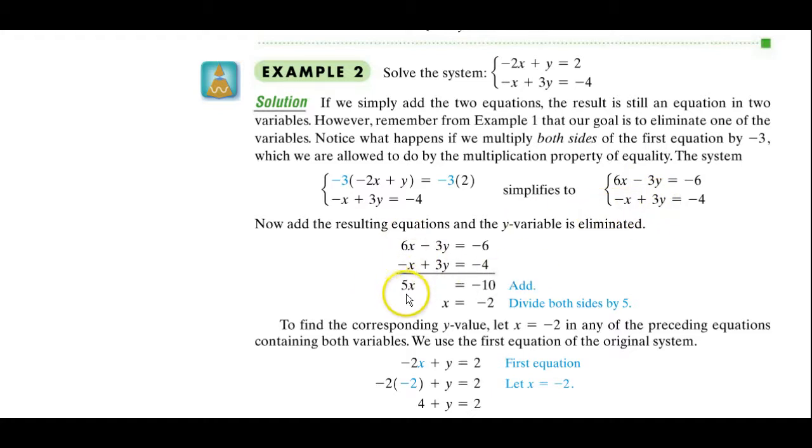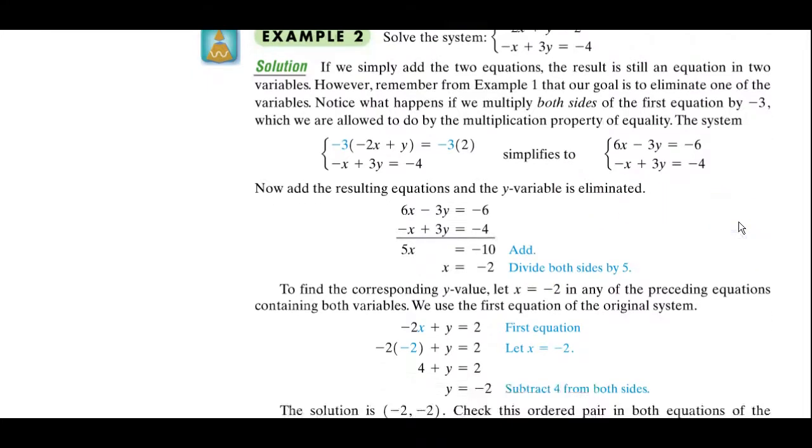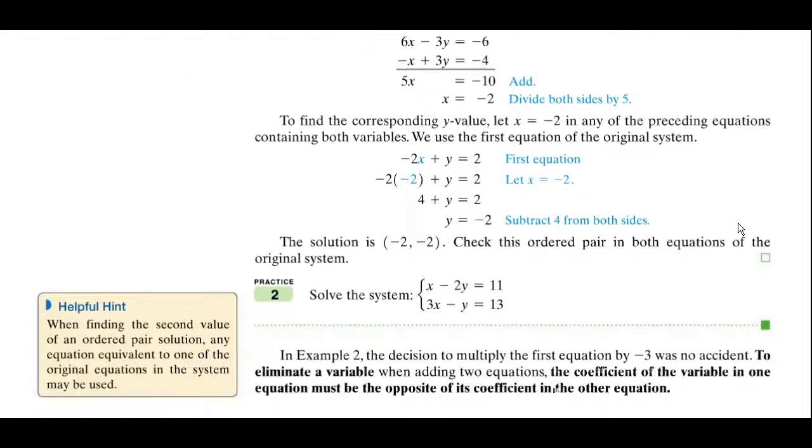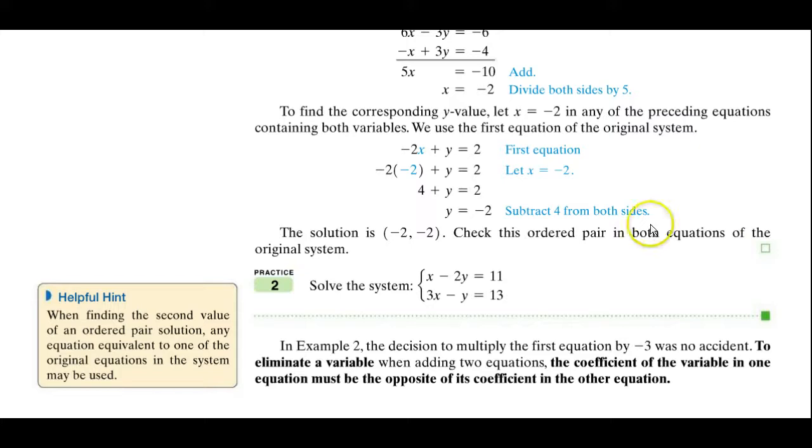We get a 5y. This is a 0. This adds up to negative 10. We divide both sides by 5. We get x equals negative 2. We then put our negative 2 into one of the other equations. And when we solve that for y, we get y equals negative 2. So our ordered pair is negative 2, negative 2. That one works.